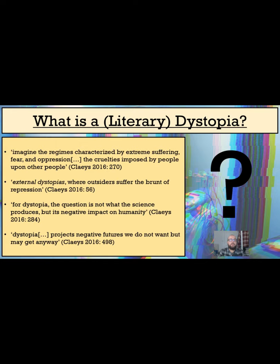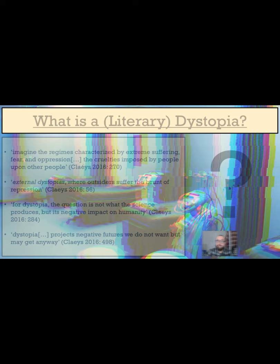So, according to Claeys then, literary dystopias depict imagined, but not necessarily totally unrealistic, negative futures. To what extent, then, does this apply to the world depicted by Ishiguro in Never Let Me Go?